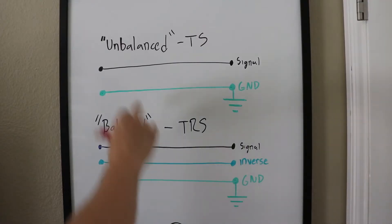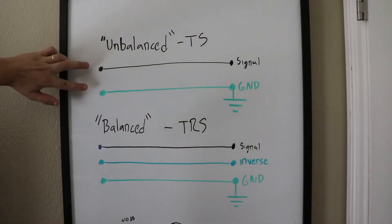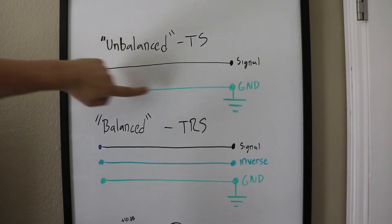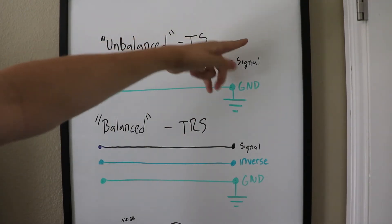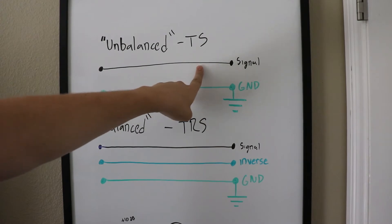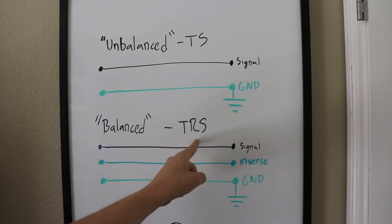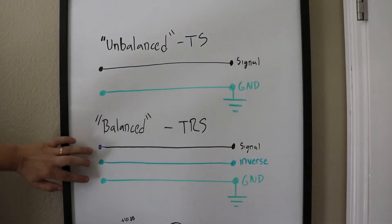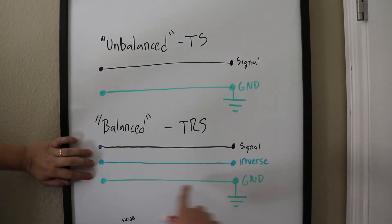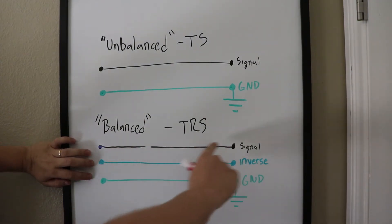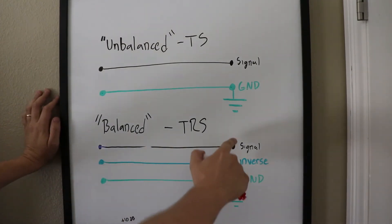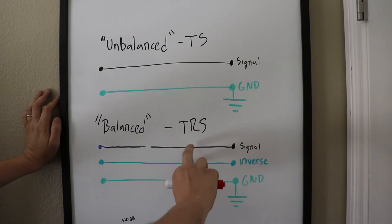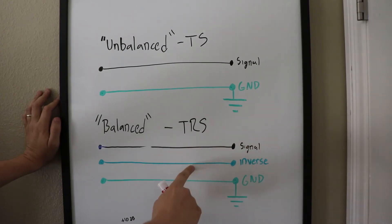To explain why there's a difference, let's go to my whiteboard. Our instrument cable has two different wires: it has the ground wire, and then it has the signal wire, which is actually carrying the signal that we're hearing. In our TRS cable, it's got three different wires — that same ground wire, that same signal wire, but then it has this third wire, which is just an inverse of the signal wire — the exact opposite.